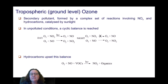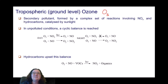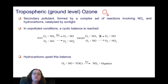Photochemical smog is associated with the formation of ozone at ground level, what we call tropospheric ozone. Ozone is a secondary pollutant in the troposphere — we call it a secondary pollutant because it is not directly released by an anthropogenic source, but is formed in the atmosphere. It is formed by a complex set of reactions involving nitrogen oxides and hydrocarbons that come from burning petrol, both industrial and traffic-related emissions, and those reactions are catalysed by sunlight. In unpolluted conditions, there is a very small amount of ozone in the troposphere.